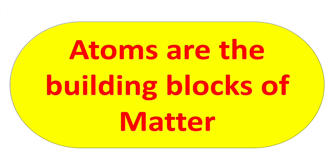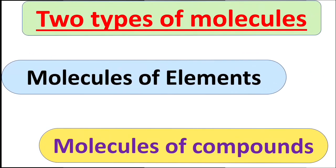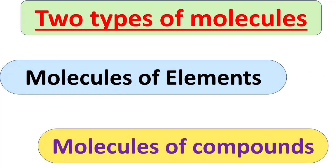There are two types of molecules. First one is molecules of elements and second one is molecules of compounds. Let us have a look on them one by one.